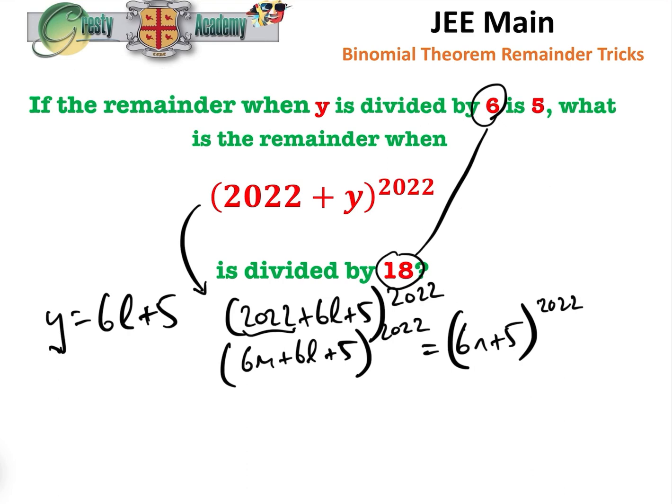And one of the things that we always want to do when we get to this position, if we can, we want to make this number as low as possible. And you'll see why later, but ideally, if we can write 5 as equal to 6 - 1, then we can rewrite this as (6n + 6 - 1)^2022, which will equal (6p - 1)^2022.